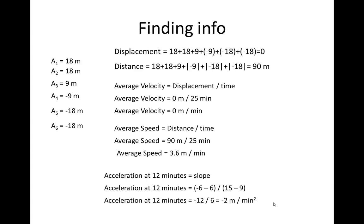The neat trick is that these same patterns follow for acceleration time graphs. On an acceleration time graph, if you want to find velocity you take the areas. For instantaneous jerk, you take the slope of the line segment on an acceleration graph. For average jerk, you take the change in acceleration and divide it by the time interval.